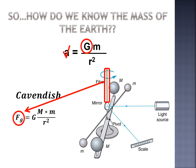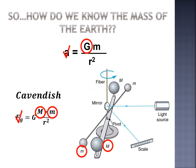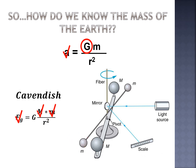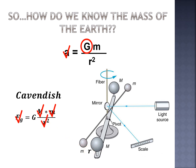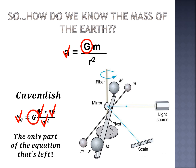Using the mirror reflection, Cavendish could determine the force of gravity because the torsional force equals the gravitational force. He could then figure out the two masses of the objects, and with those masses and the distance between them, he could determine the denominator of the equation. That left only the gravitational constant, which he solved for very accurately — giving us the G we use in this equation.